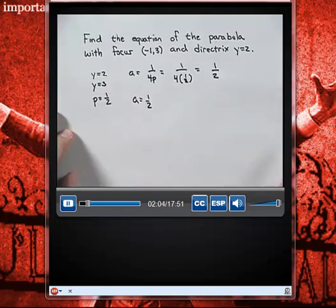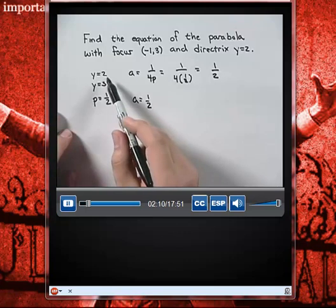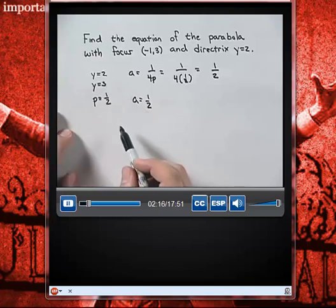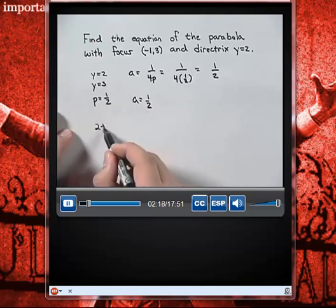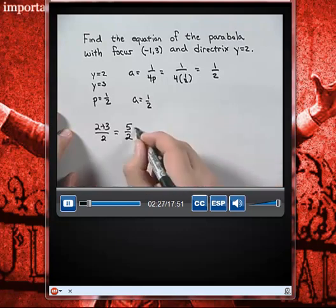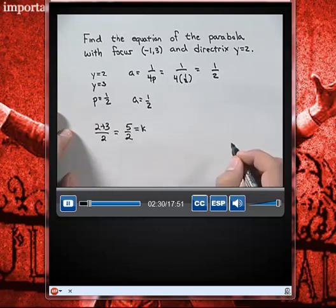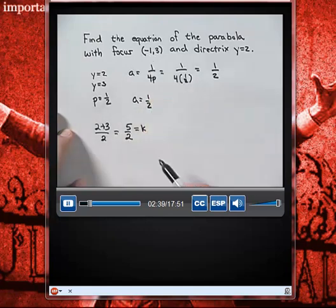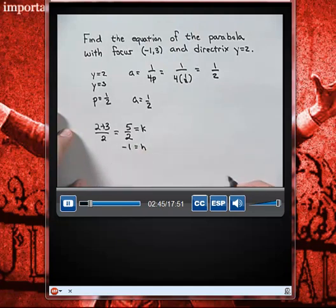The next thing we'll do is find the value of the vertex. The y-value of the directrix was 2 and the y-value of the focus was 3, so the vertex is the y-value that lies at the midpoint between them. So 2 plus 3 divided by 2 gives us 5 halves. Since the focus lies on the x-value of negative 1, the vertex will also have the x-value of negative 1.